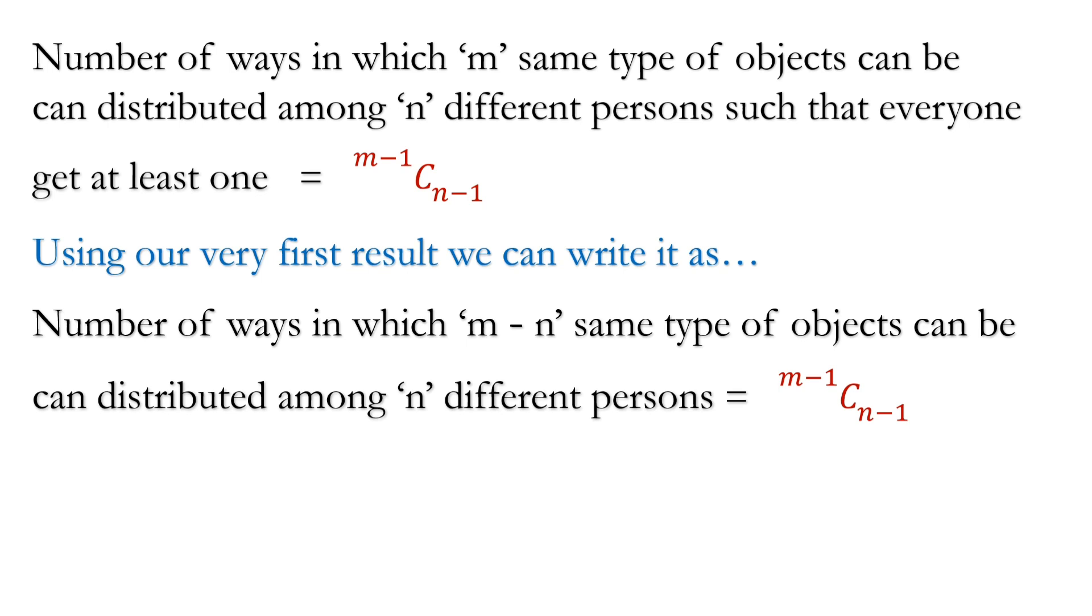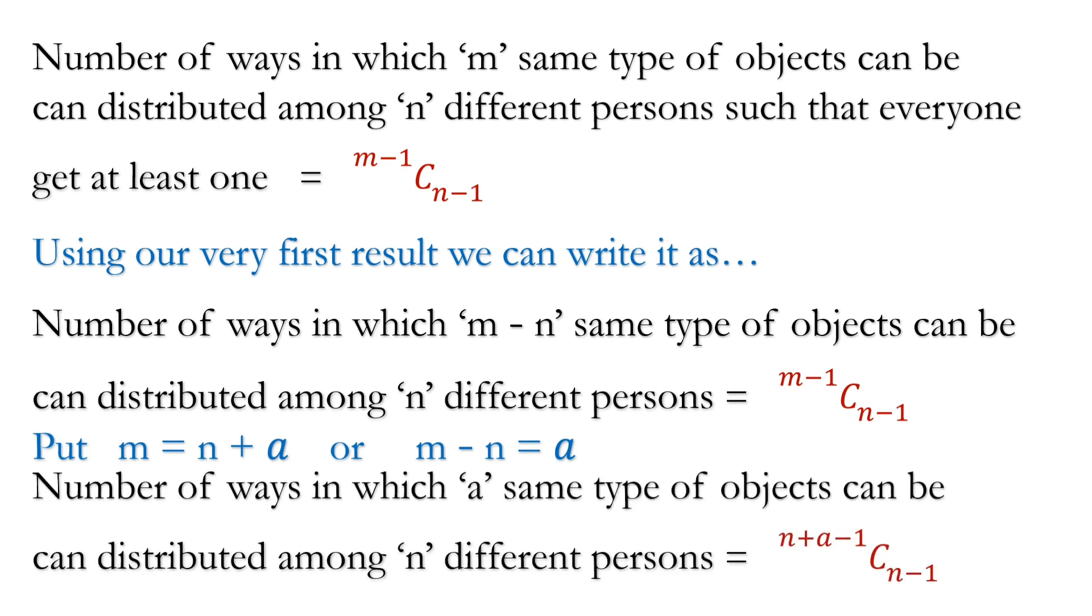Now put m is equal to n plus a or m minus n is equal to a. We get number of ways in which a same type of objects can be distributed among n different persons is equal to n plus a minus 1 C n minus 1. And this is the result which we need.